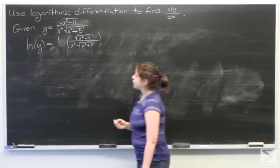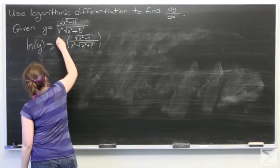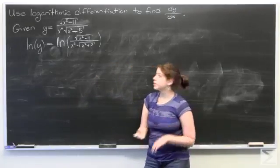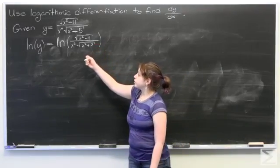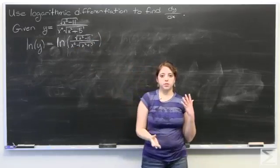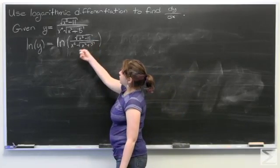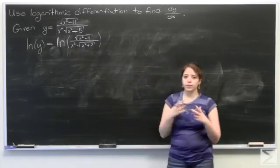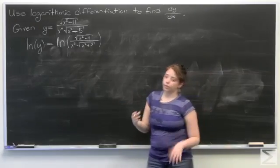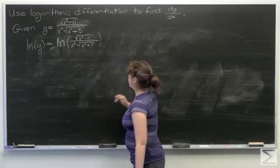So how do we do that? We take the natural log of y equals the natural log of this fraction: x squared minus eleven over x to the sixth times x squared plus five. Using our logarithmic rules, the logarithm of a over b is the same as the logarithm of a minus the logarithm of b. Since the two bottom terms are multiplied together, they are both subtracted from the numerator.